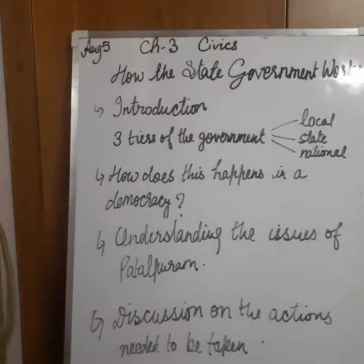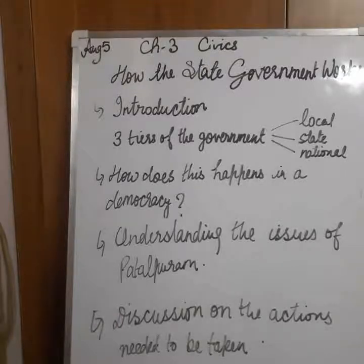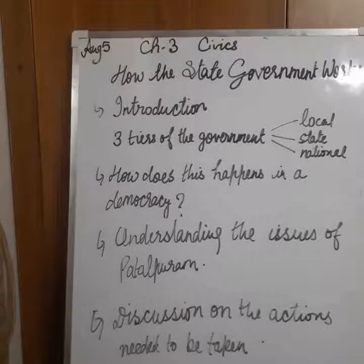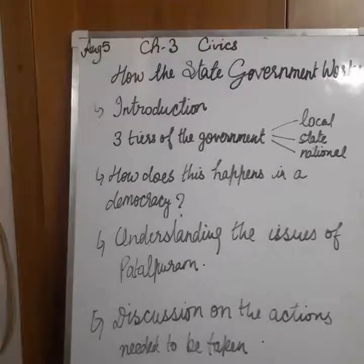First of all, if you can recall in your last class you must have studied about the levels of government. You know that the government works on three levels in democracy — that is local, state and national level. The local level means in your village, town or locality; the state level covers an entire state like Punjab, Haryana or Rajasthan; and the national level relates to the entire country.